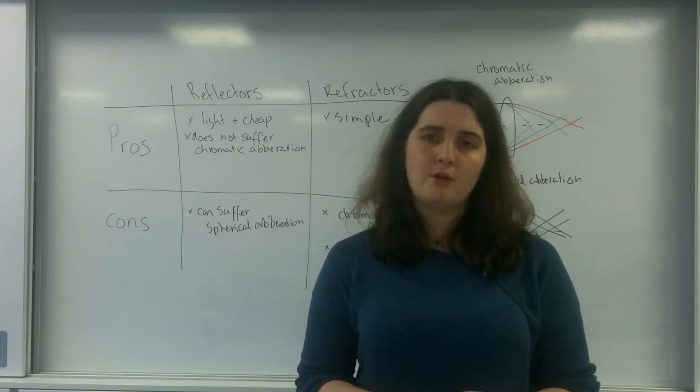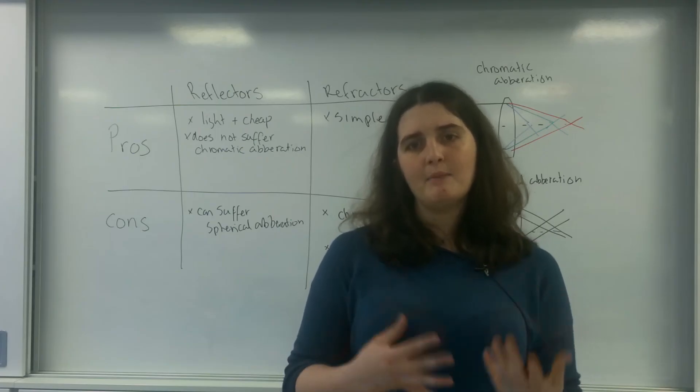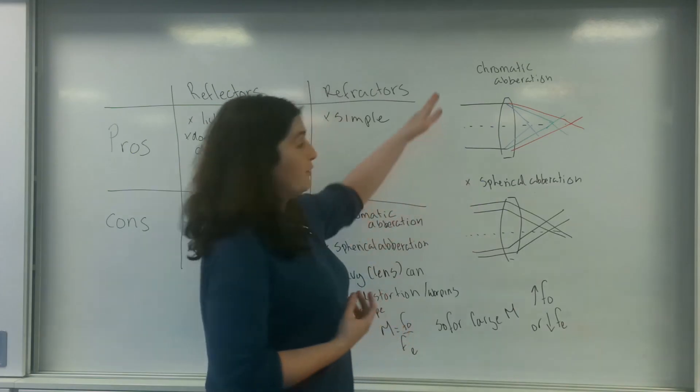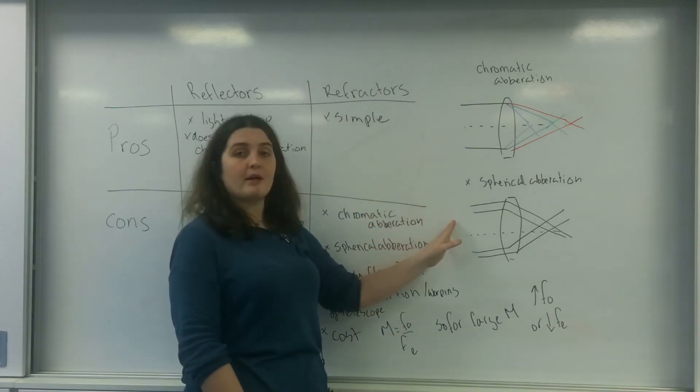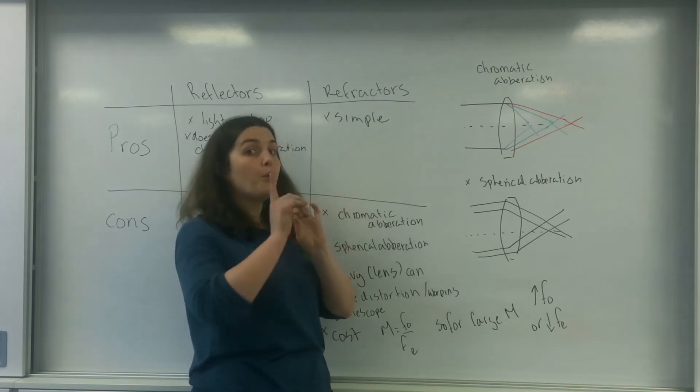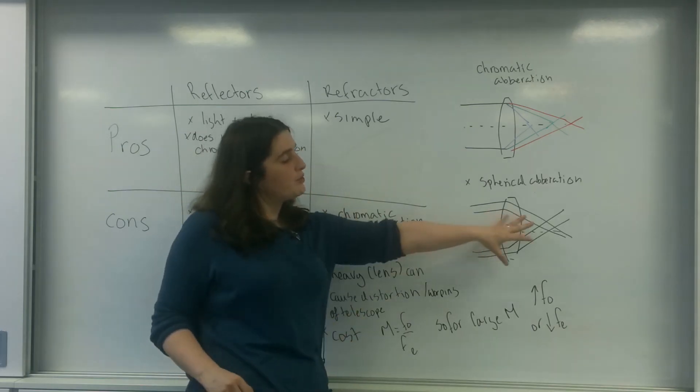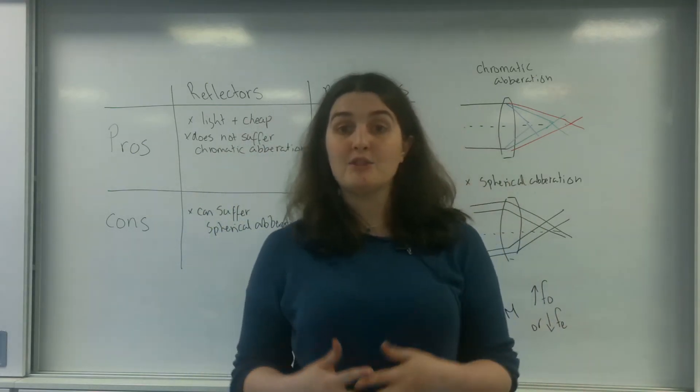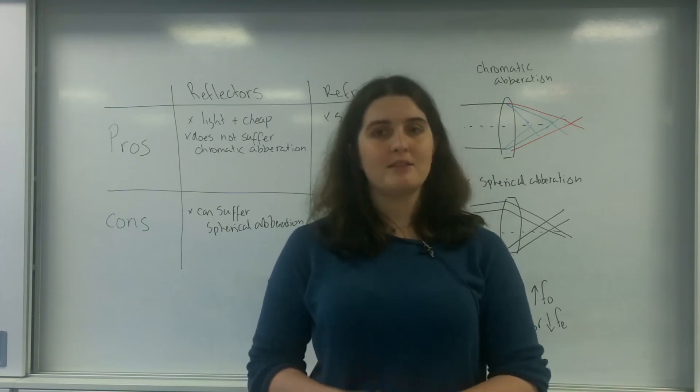So there are the pros and cons of reflectors and refractive telescopes, and a little bit more information about the two types of aberration that can happen. The chromatic aberration, which is all to do with the wavelength, and spherical aberration, which is all to do with the fact that the lens or the mirror is not a perfect parabolic shape, which causes when the rays come in, them not to be out of focus. So there we go, pros and cons of reflectors and refractors.